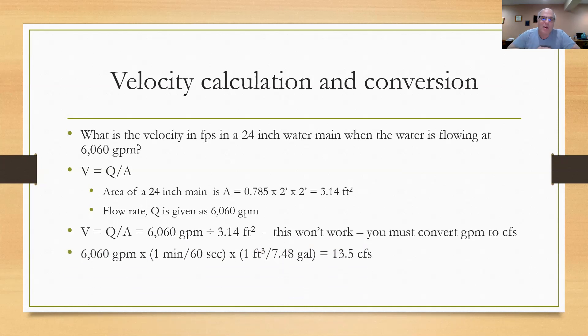What I chose to do is convert the gallons per minute to cubic feet per second. I took 6060 gallons per minute multiplied by one minute over 60 seconds, and one cubic foot over 7.48 gallons, which comes out to 13.5 cubic feet per second. Now I can take V equals Q over A and take 13.5 cubic feet per second divided by 3.14 square feet. Cubic feet in the numerator, square feet in the denominator cancel out, leaving only feet per second, and I come up with 4.3 feet per second.